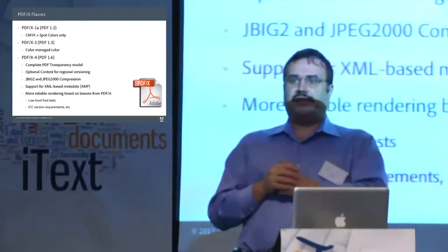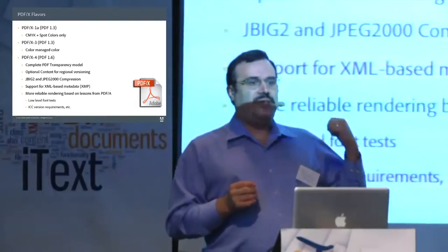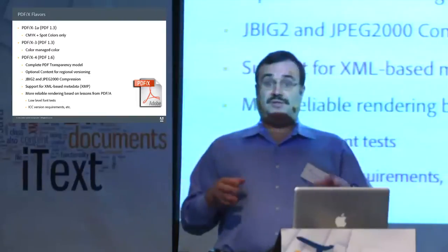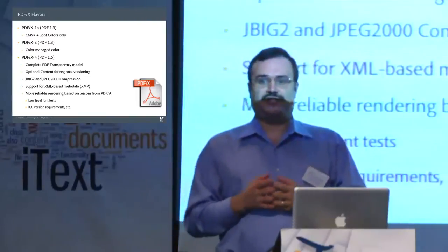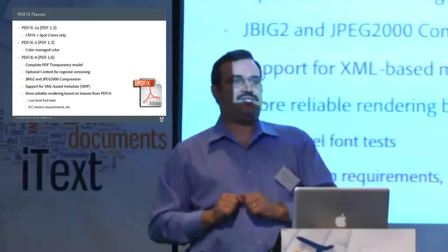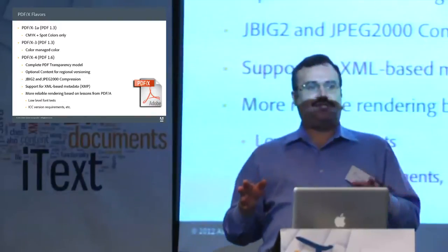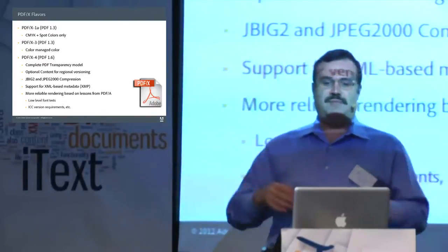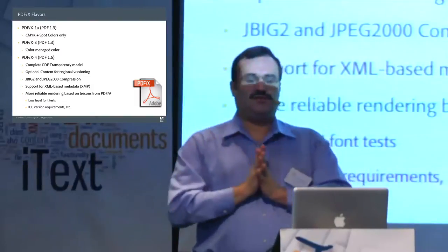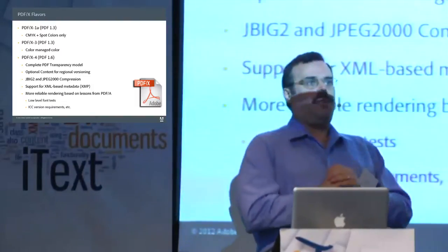Some people usually ask: where's X-2? We pretend it never happened. There actually is an X-2, but we don't talk about it. The newer one is X-4, which came out in 2008. We finally brought PDF/X into the new millennium, moving from PDF 1.3 — pre-transparency, pre-modern compression — forward to PDF 1.6.